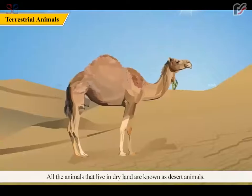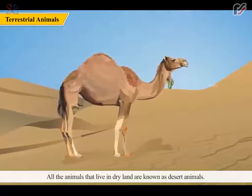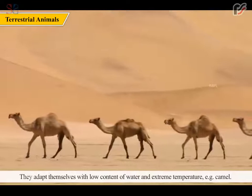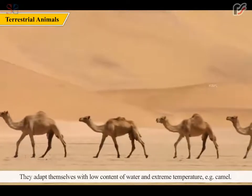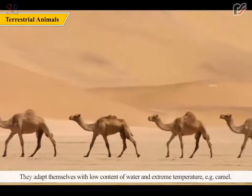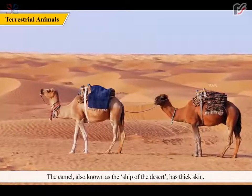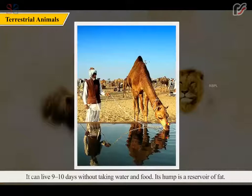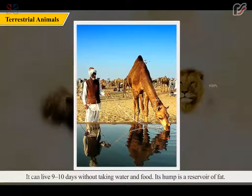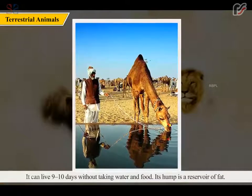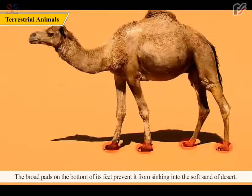All the animals that live in dry land are known as desert animals. They adapt themselves to low water content and extreme temperatures. The camel, also known as the ship of the desert, has thick skin. It can live nine to ten days without taking water and food. Its hump is a reservoir of fat. The broad pads on the bottom of its feet prevent it from sinking into the soft sand of the desert.